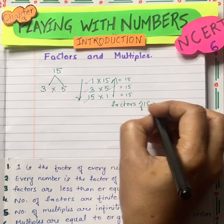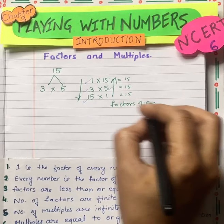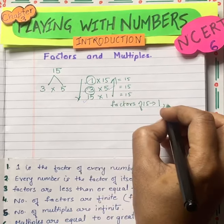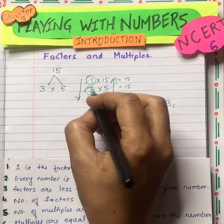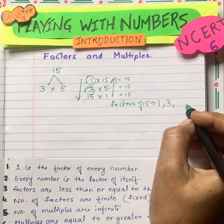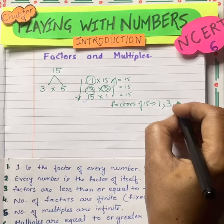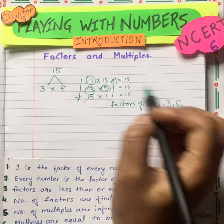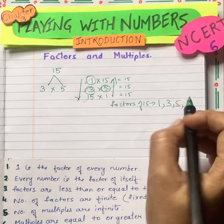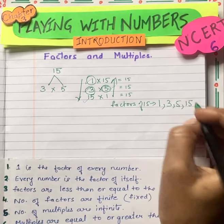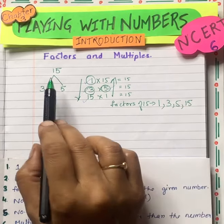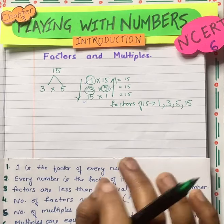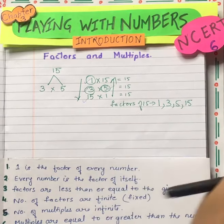So what are the factors of 15? We have 1, 3, 5, and 15. Now we will write them in ascending order. Factors are clear. Now we come to multiples.